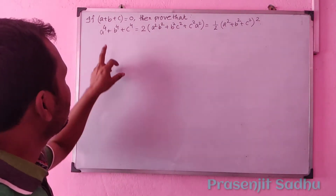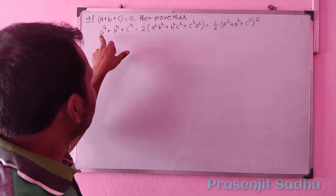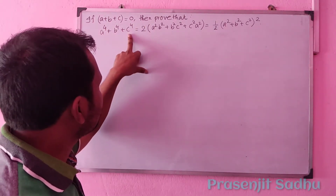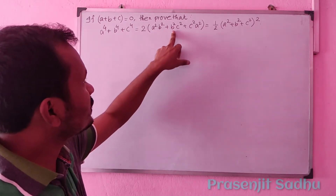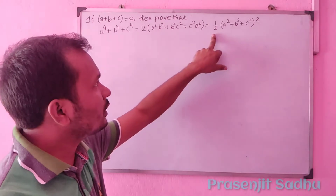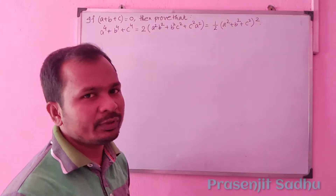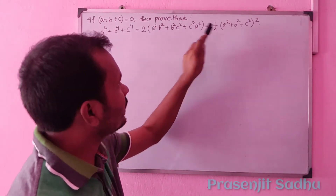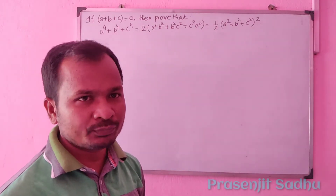The question is: if a plus b plus c is equal to 0, then prove that a to the power 4 plus b to the power 4 plus c to the power 4 is equal to 2 into (a²b² + b²c² + c²a²), which is equal to half of (a² + b² + c²) whole square. That means there are three parts in the question, and all three parts will be equal to each other.